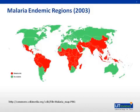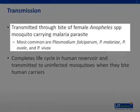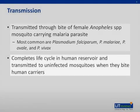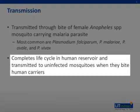Malaria is transmitted through the bite of a female Anopheles mosquito that is carrying the malaria parasite. There are multiple species of Plasmodium parasites that cause malaria. The most common are Plasmodium falciparum, Plasmodium malariae, Plasmodium ovale, and Plasmodium vivax. The parasite is transmitted to uninfected mosquitoes when they bite an infected human during periods of parasitemia. Thus, humans act as the reservoir for this parasite.